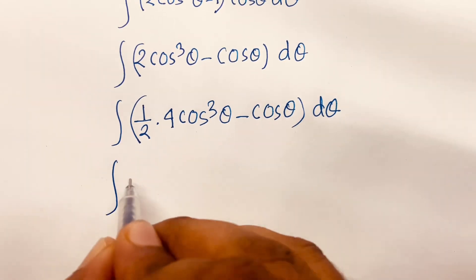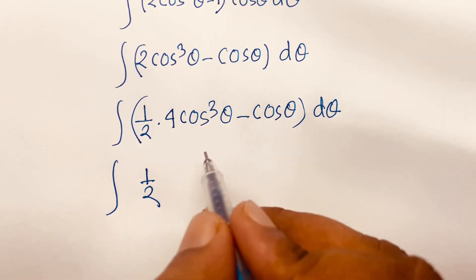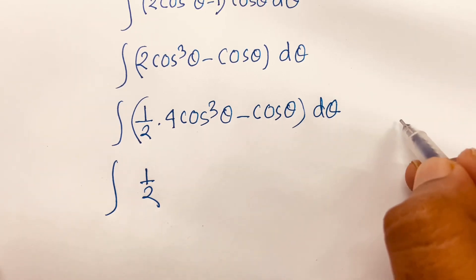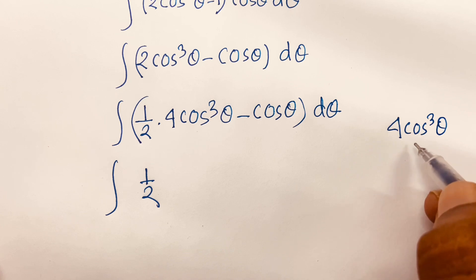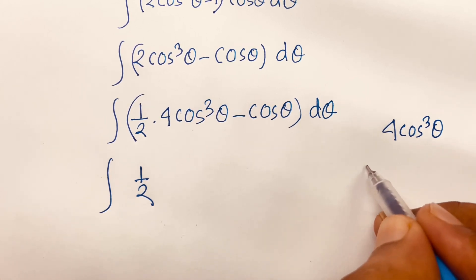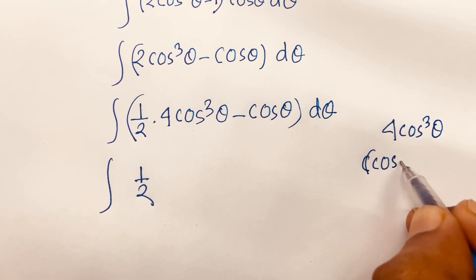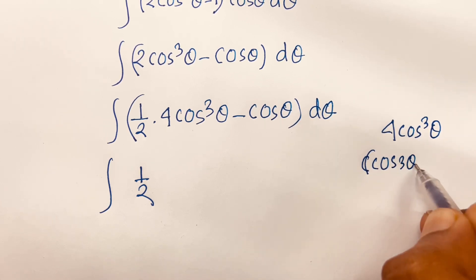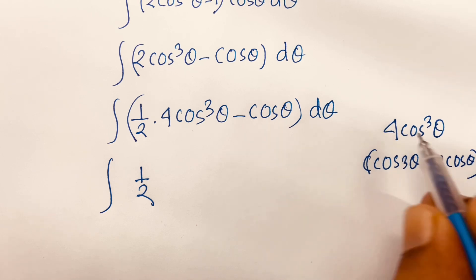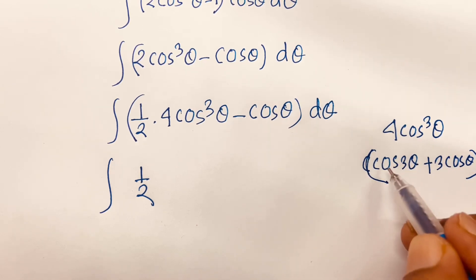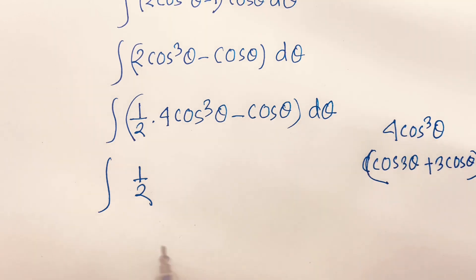From the integral of (1/2)·4cos³θ, we apply the trigonometric identity that 4cos³θ equals cos(3θ) + 3cos(θ). So 4cos³θ is replaced by cos(3θ) + 3cos(θ).